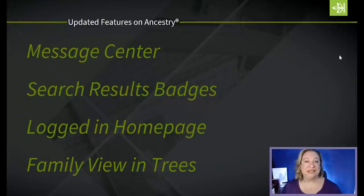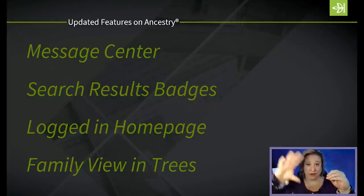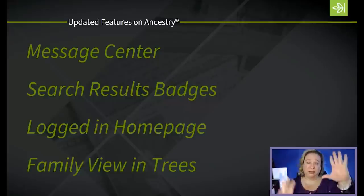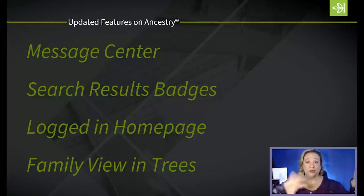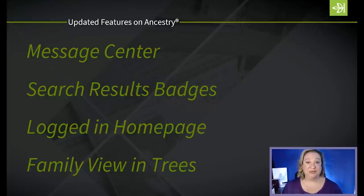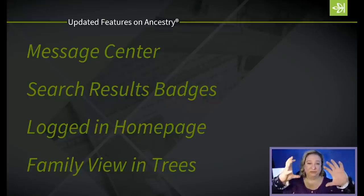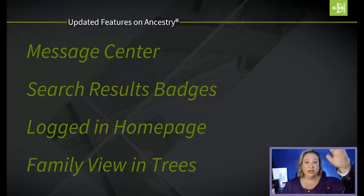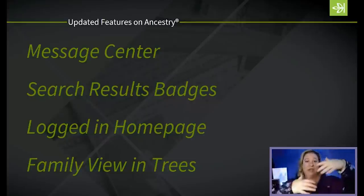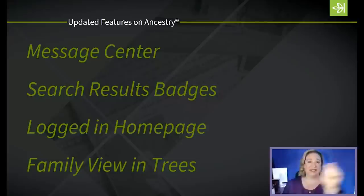Based on a lot of customer feedback, we've recently revamped the family view in family trees. There's a pedigree view showing you, parents, grandparents, and so on. You can toggle to family view, which also shows siblings, aunts, uncles, cousins, nieces, and nephews. The biggest change is that it used to only show four or five generations at a time, and expanding would collapse other information. Now you can just keep expanding in any direction, clicking and dragging anywhere in your tree all at once.